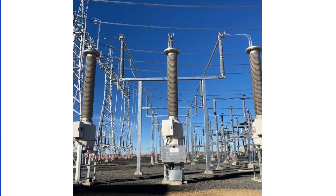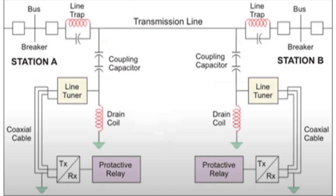The Coupling Capacitor, or Capacitive Voltage Transformer, connects the carrier equipment to the transmission line. It offers low impedance to high-frequency carrier signals while providing high impedance to the 50 Hz power frequency. This allows the carrier frequency signal to safely enter the PLCC equipment. To make the circuit purely resistive, an inductor is added in series with the capacitor, forming a resonant circuit that reduces reactive power.